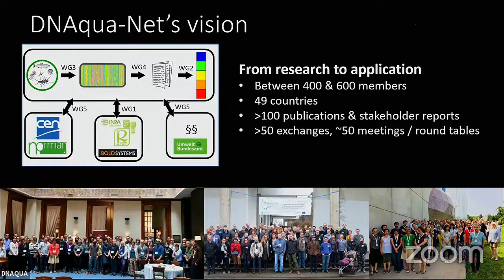Working Group 1 deals with reference databases — we must assign taxonomy to our DNA molecules and therefore need reference databases. Working Group 5 deals with implementation, because it's a lot about legal frameworks and how new methods can be moved into real biomonitoring as part of legal frameworks. DNAqua-Net has between 400 and 600 members, 49 countries are involved, and we have so far more than 100 scientific publications, stakeholder reports, and many research exchanges across countries.